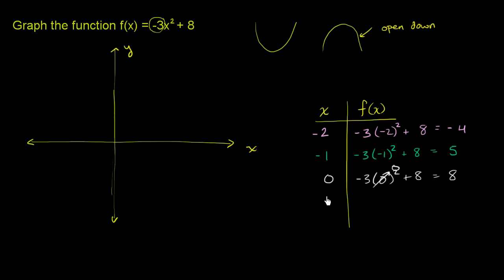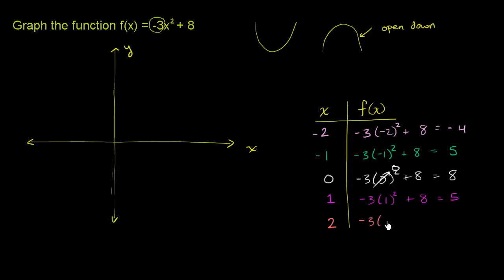When x equals 1, f of x equals negative 3 times 1 squared plus 8. 1 squared is 1, so negative 3 plus 8 equals 5. And when x equals positive 2, f of x equals negative 3 times 2 squared plus 8. 2 squared is 4, times negative 3 is negative 12, plus 8 equals negative 4.